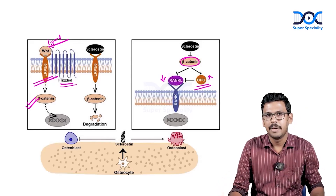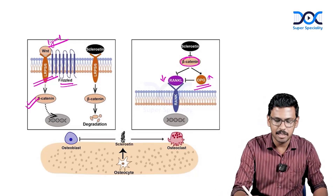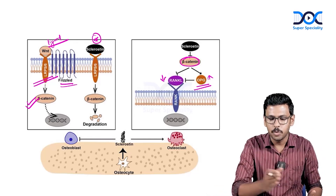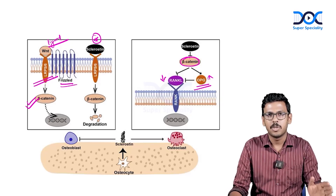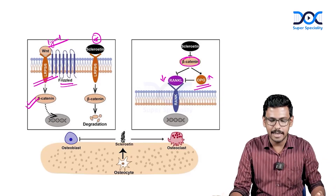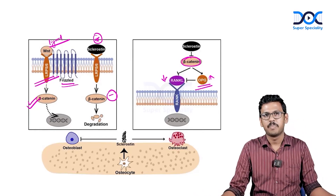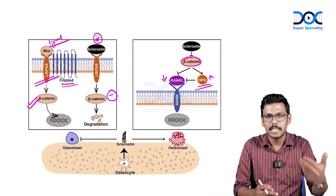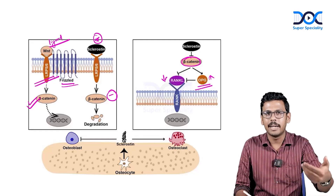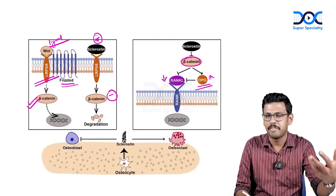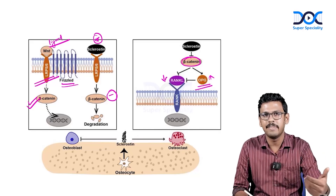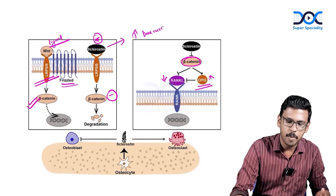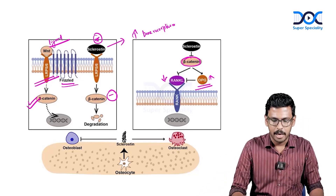The major regulator of WNT signaling is sclerostin. Sclerostin competes with WNT to bind to its receptor LRP5/6, displacing WNT from its binding site and thereby inhibiting beta-catenin action. When beta-catenin is inactivated, osteoclast inhibition is lifted, more RANK ligand binds to osteoclast receptors causing stimulation and differentiation, and osteoblast survival is reduced.